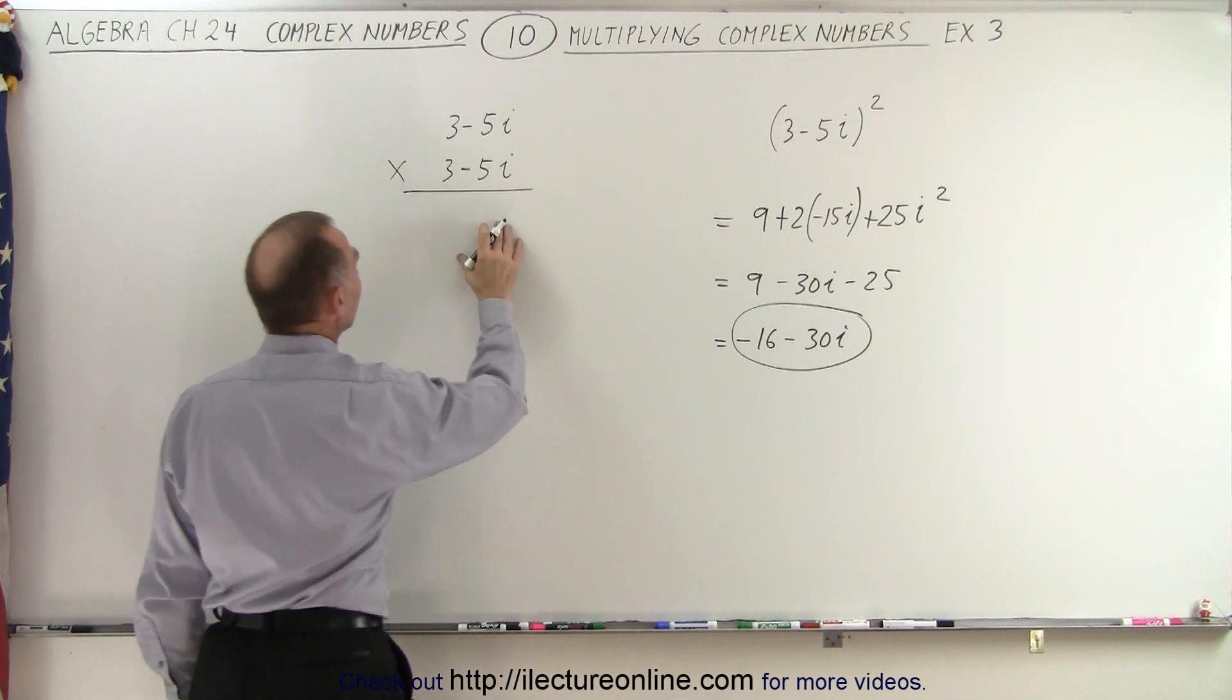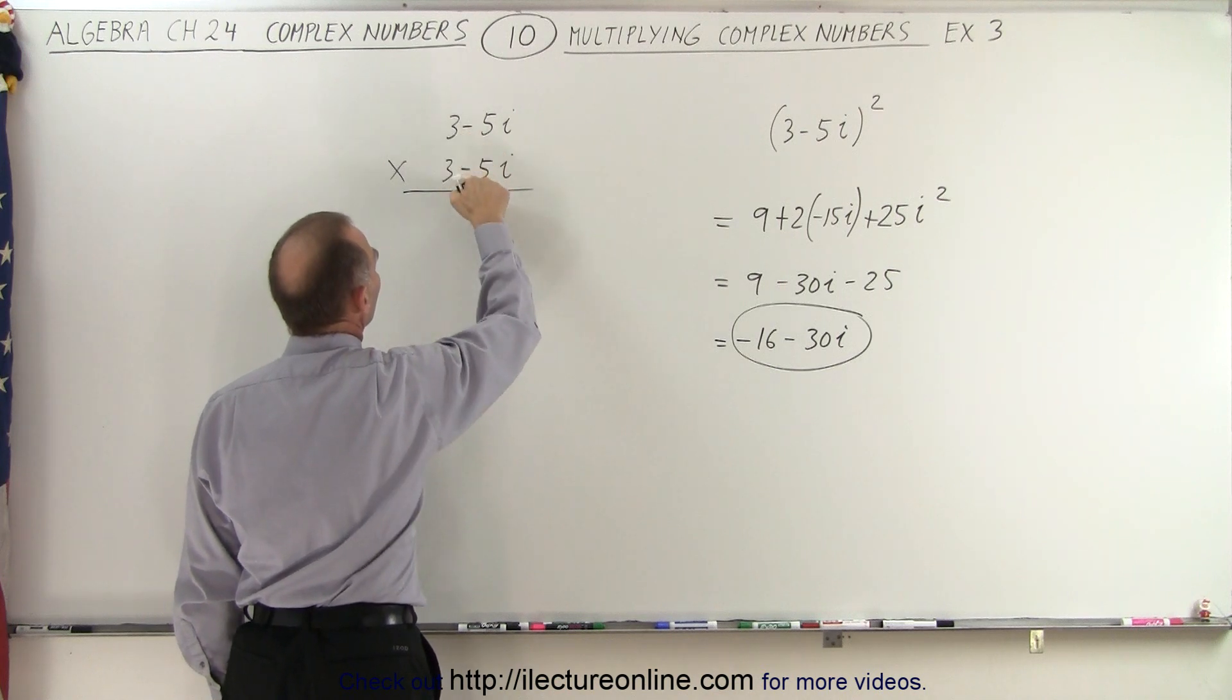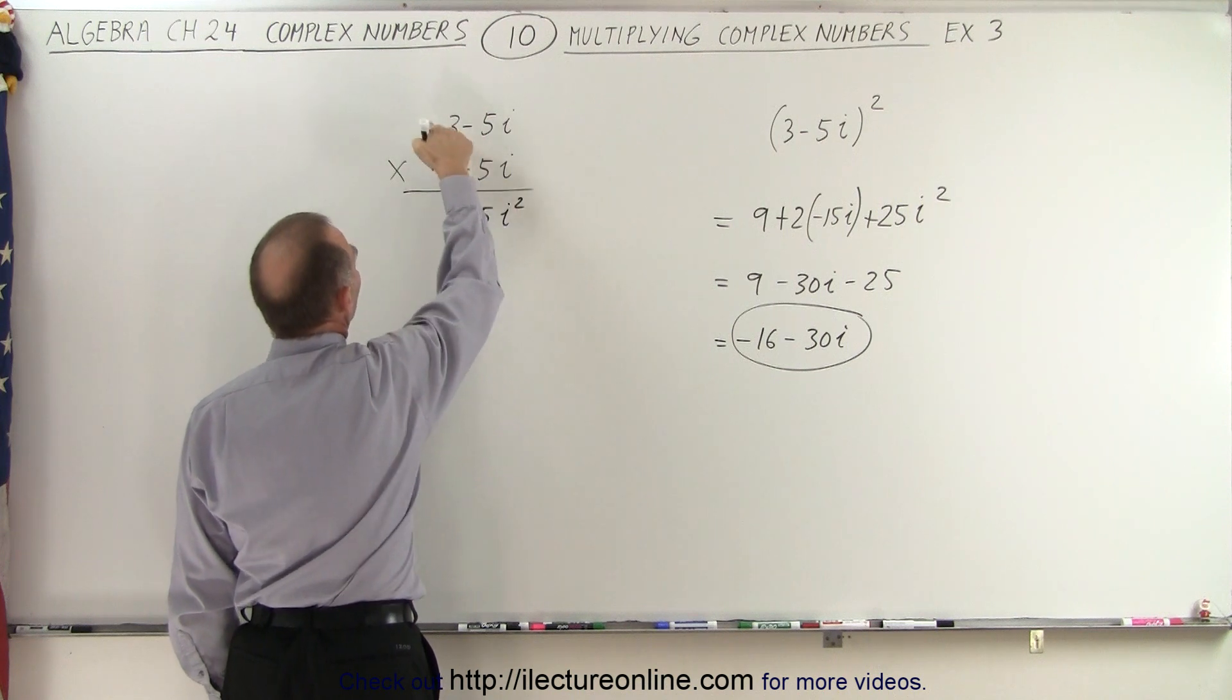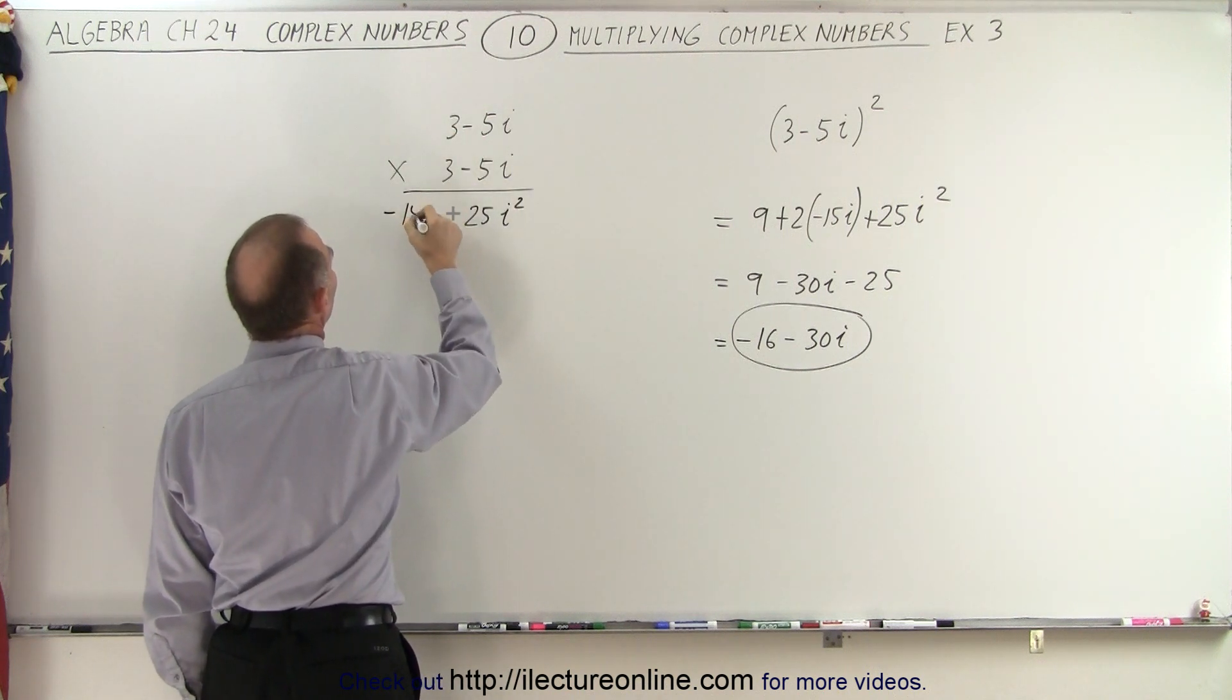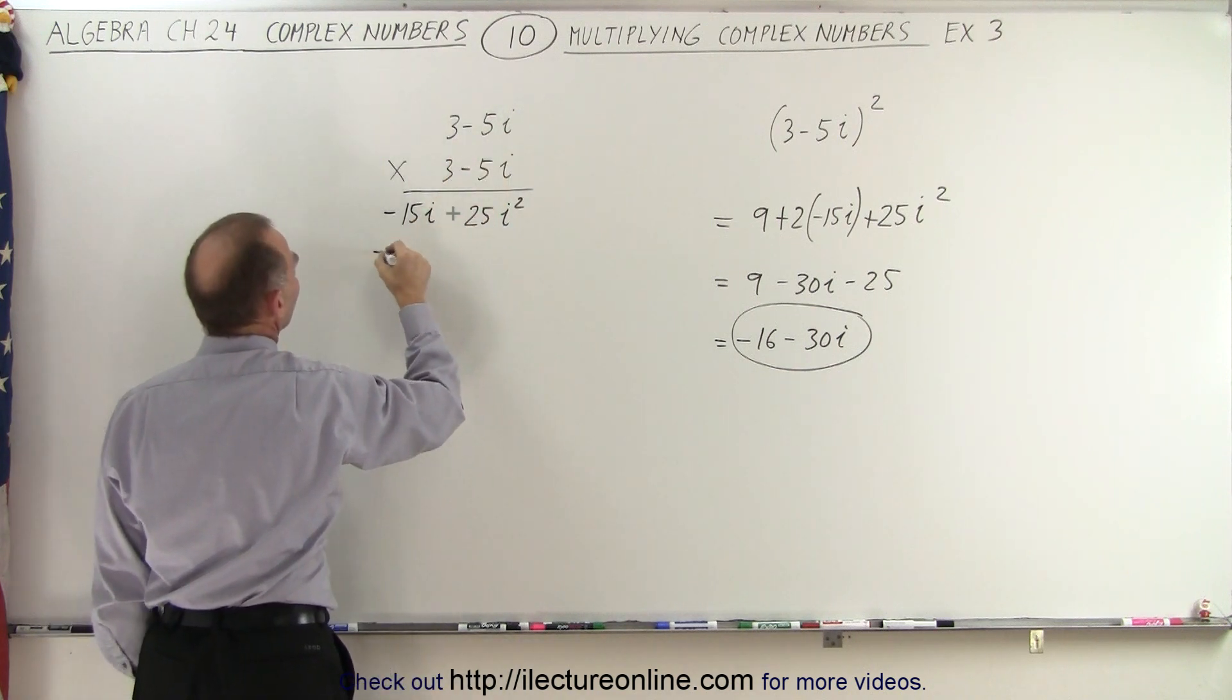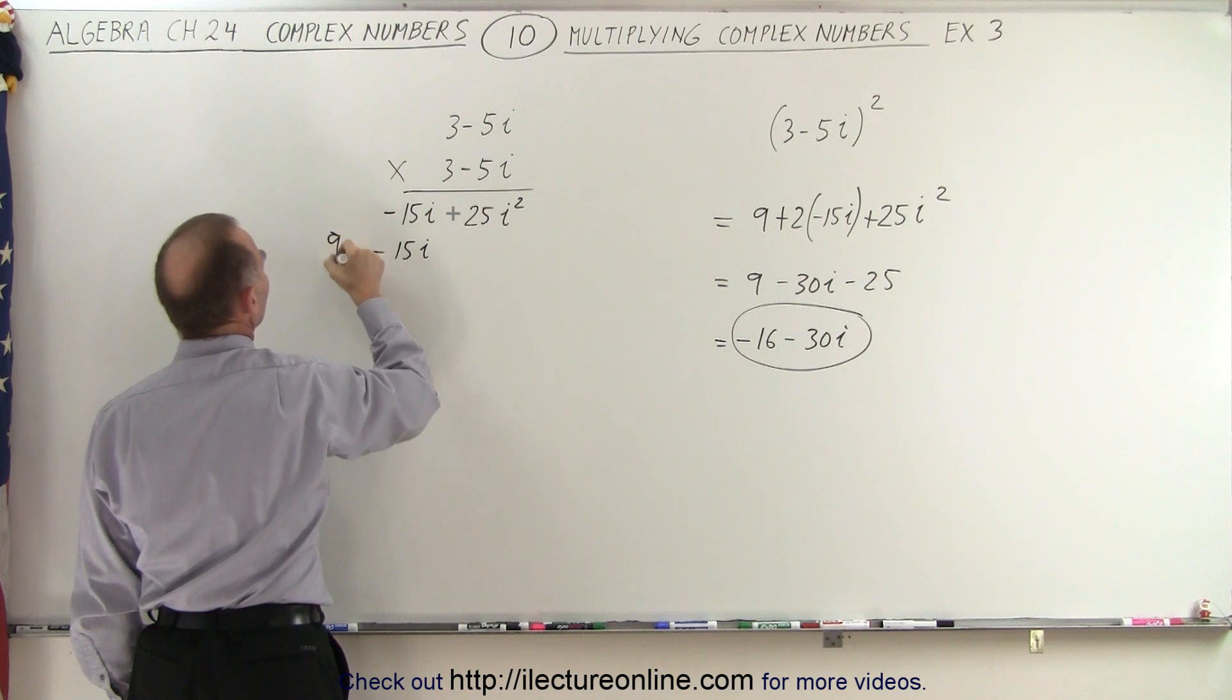Here we do the same thing as before. We multiply this times this. So minus times the minus gives us plus. That gives us 25i squared. Minus 5i times 3 gives us minus 15i. 3 times a minus 5i gives us a minus 15i. And 3 times 3 gives us a positive 9.